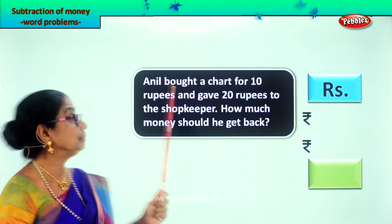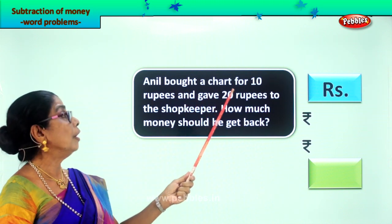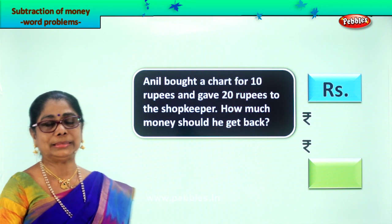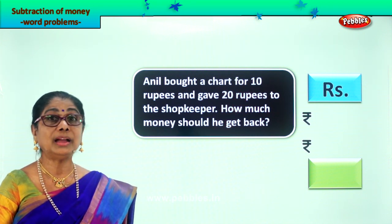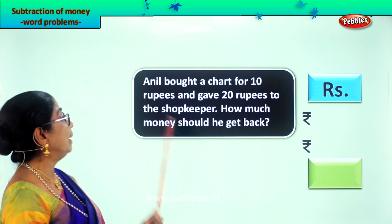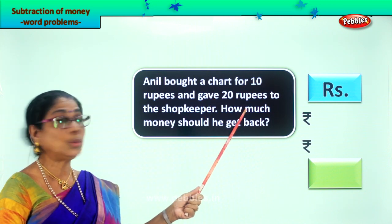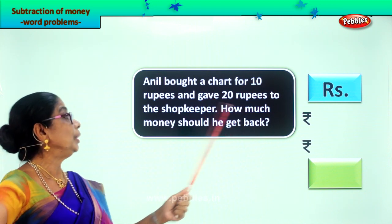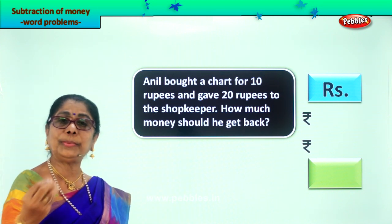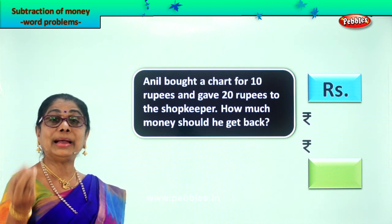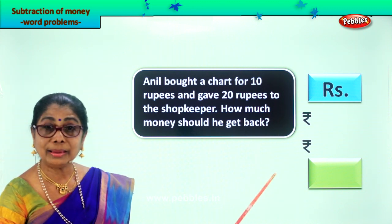Let's read together. Anil bought a chart for 10 rupees. What did he go to the shop and buy? A chart for rupees 10. Anil gave 20 rupees to the shopkeeper. He buys a chart for 10 rupees and gives the shopkeeper 20 rupees. How much money should he get back?